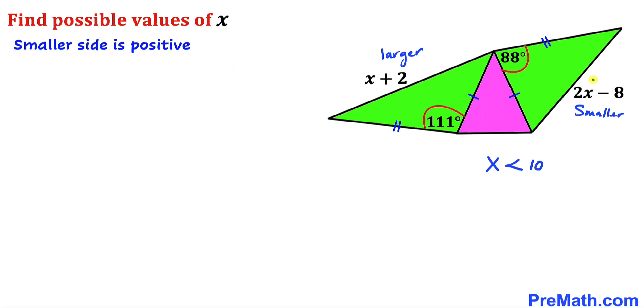Now this is our smaller side and this is going to be our restriction that our smaller side is a positive value. Therefore I can write this smaller length 2x minus 8 is going to be greater than 0.